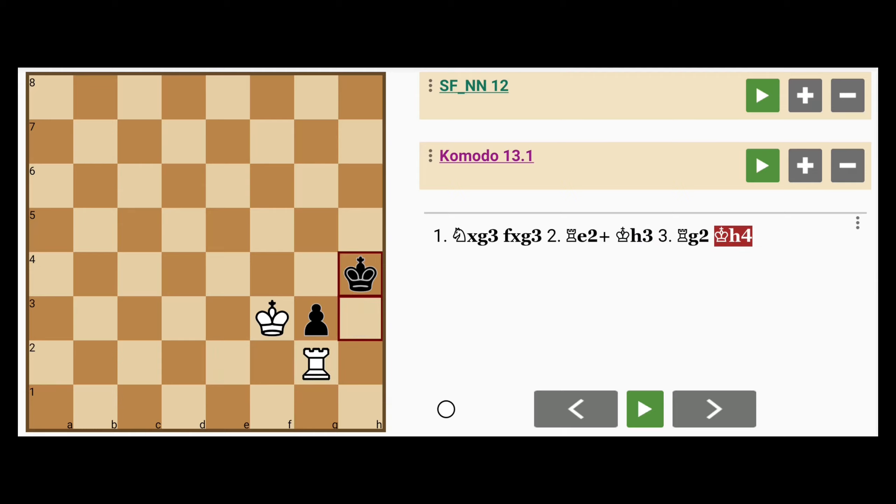King to h4, rook captures pawn, king to h5, king to f4, king to h6, king to f5, and you get the idea. In a few more moves, black will be checkmated.